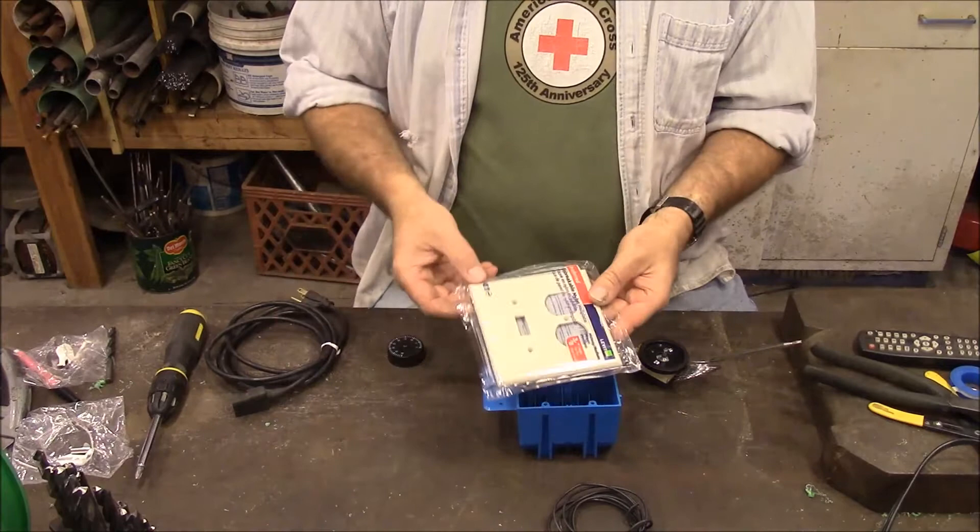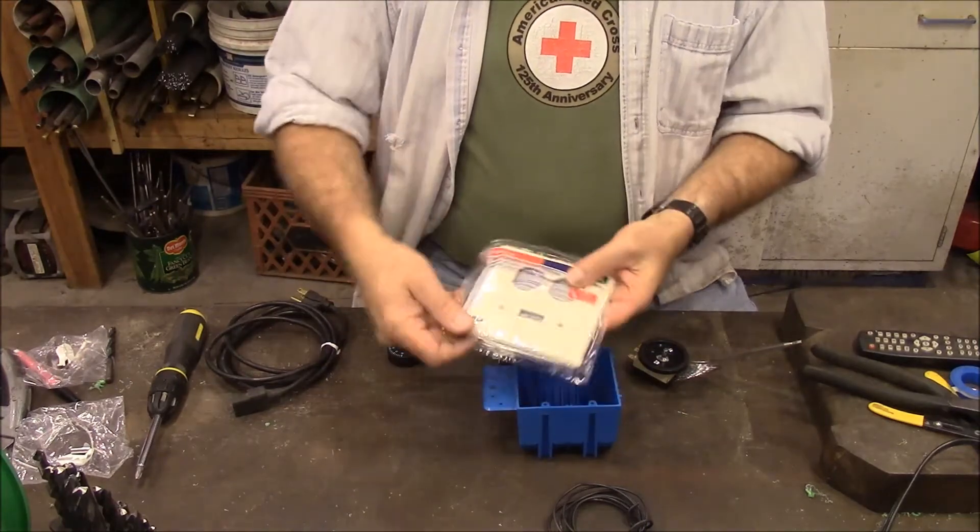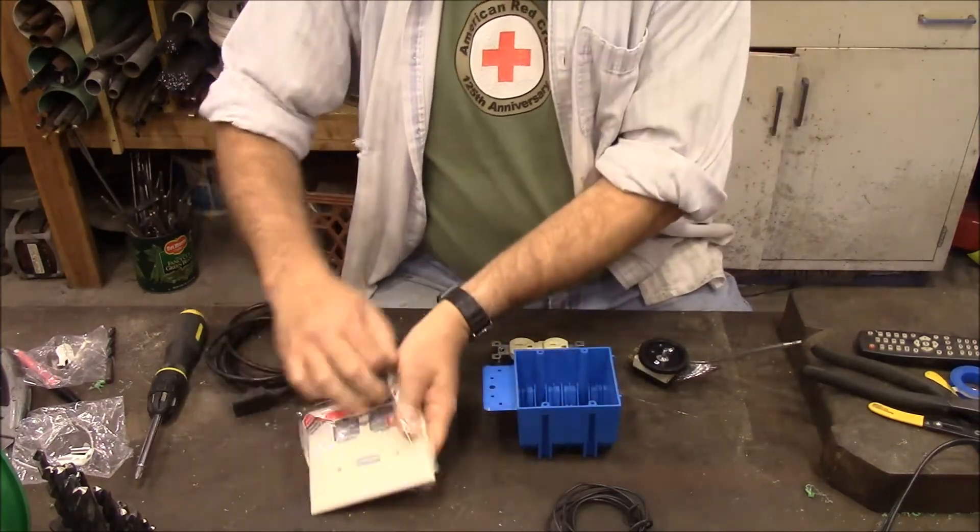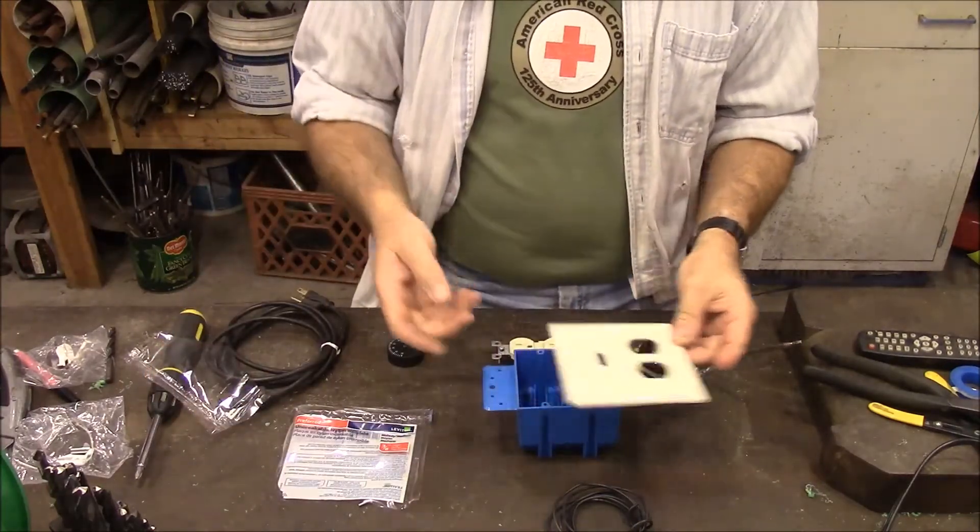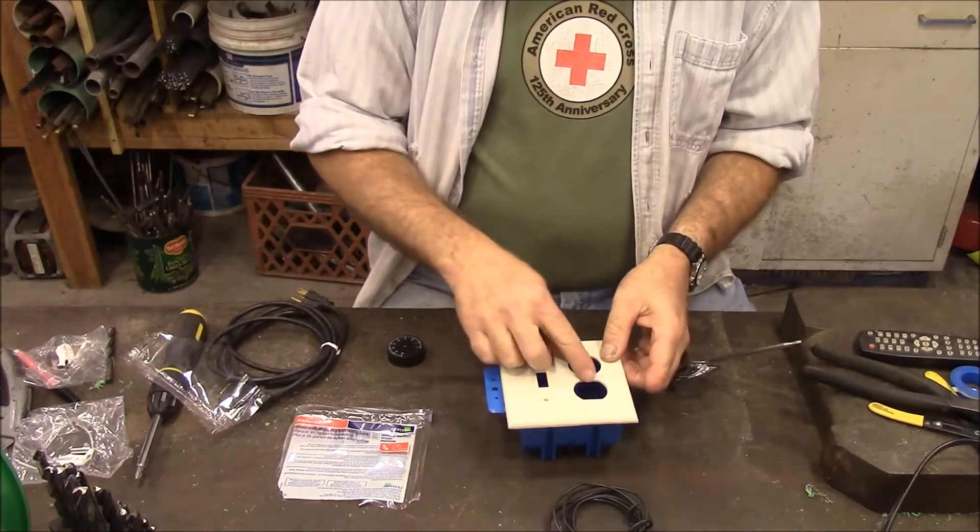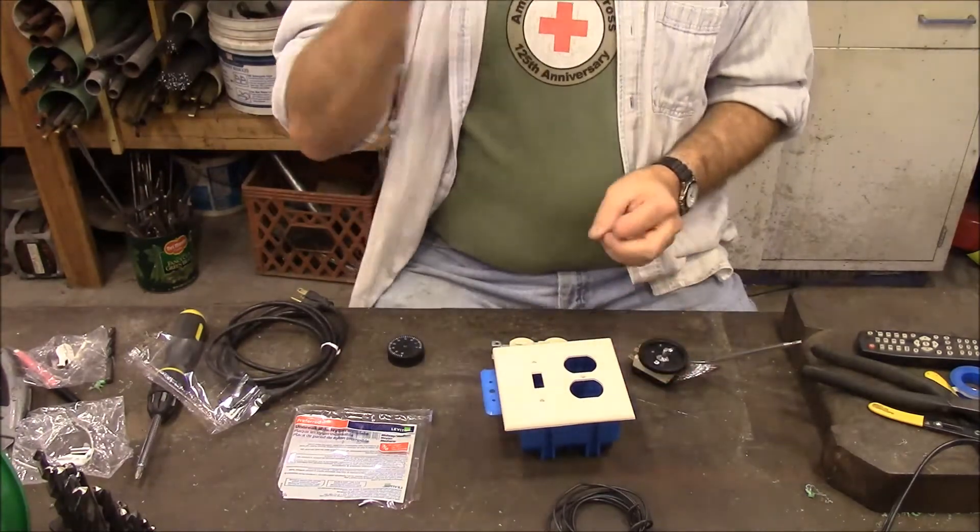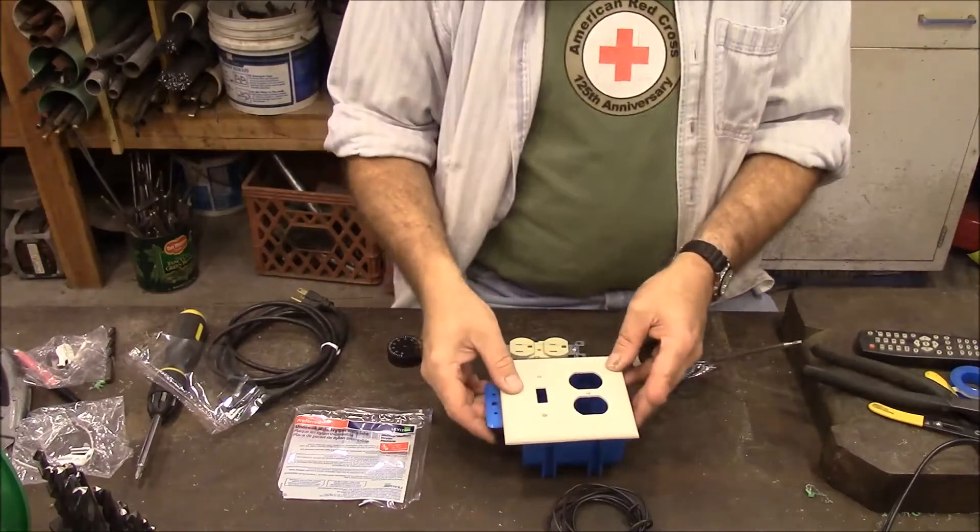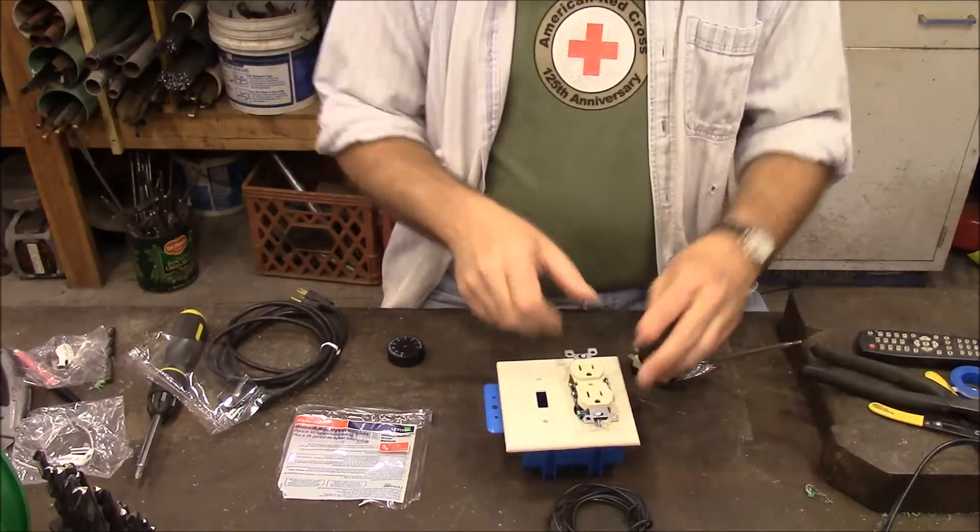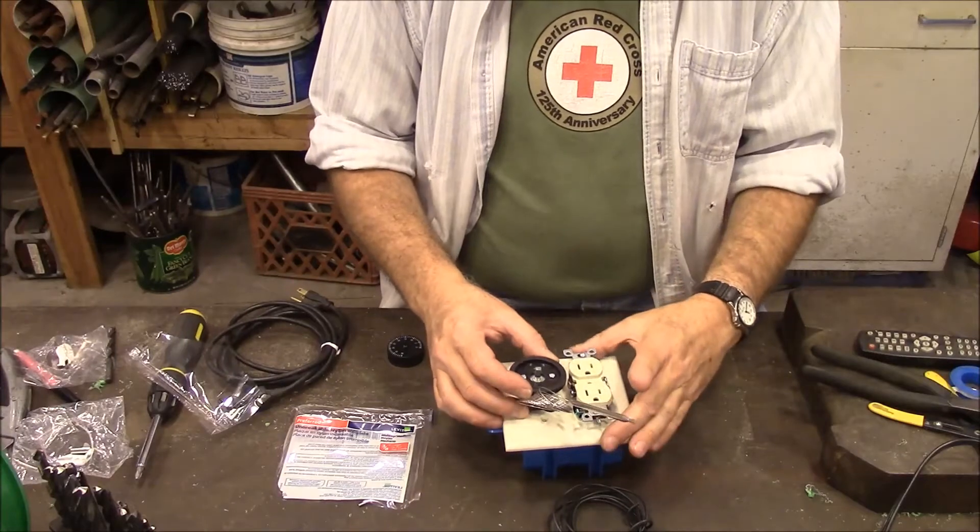This is a plate I got at Home Depot. It's got a place for an outlet and a switch. Actually if it was an outlet and a blank it would be easier to work with, but this is cheaper so that's why I got this one. I'm going to put an outlet here and then we're going to mount this over here.